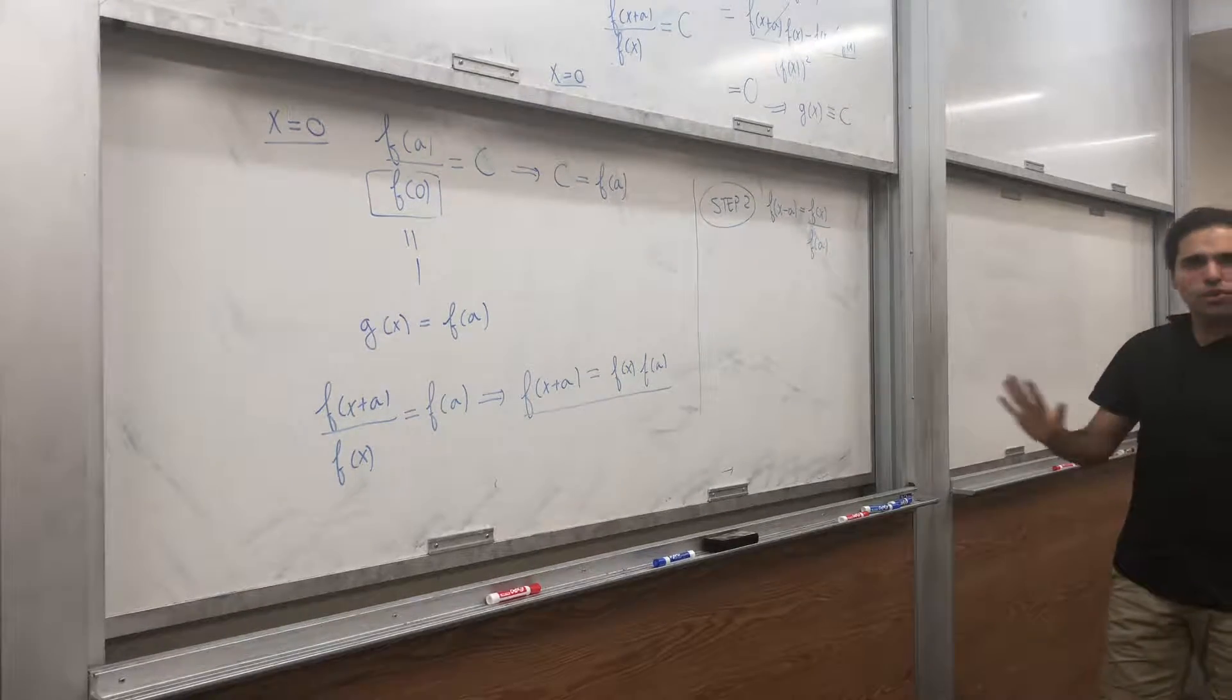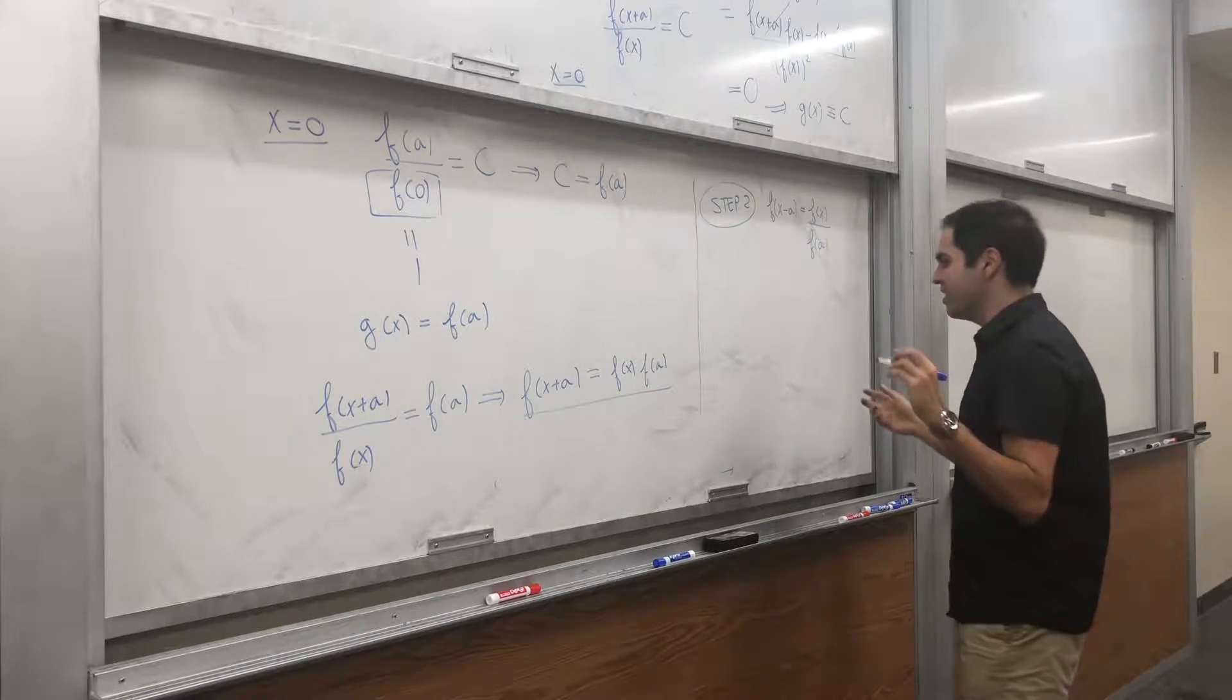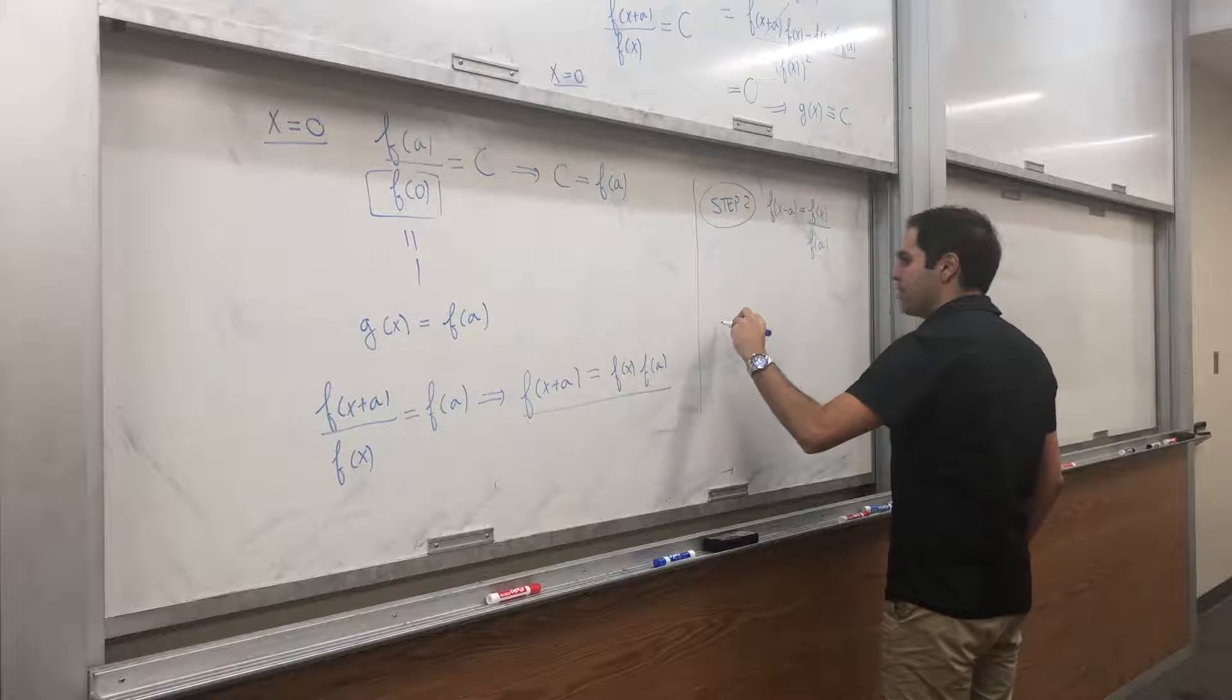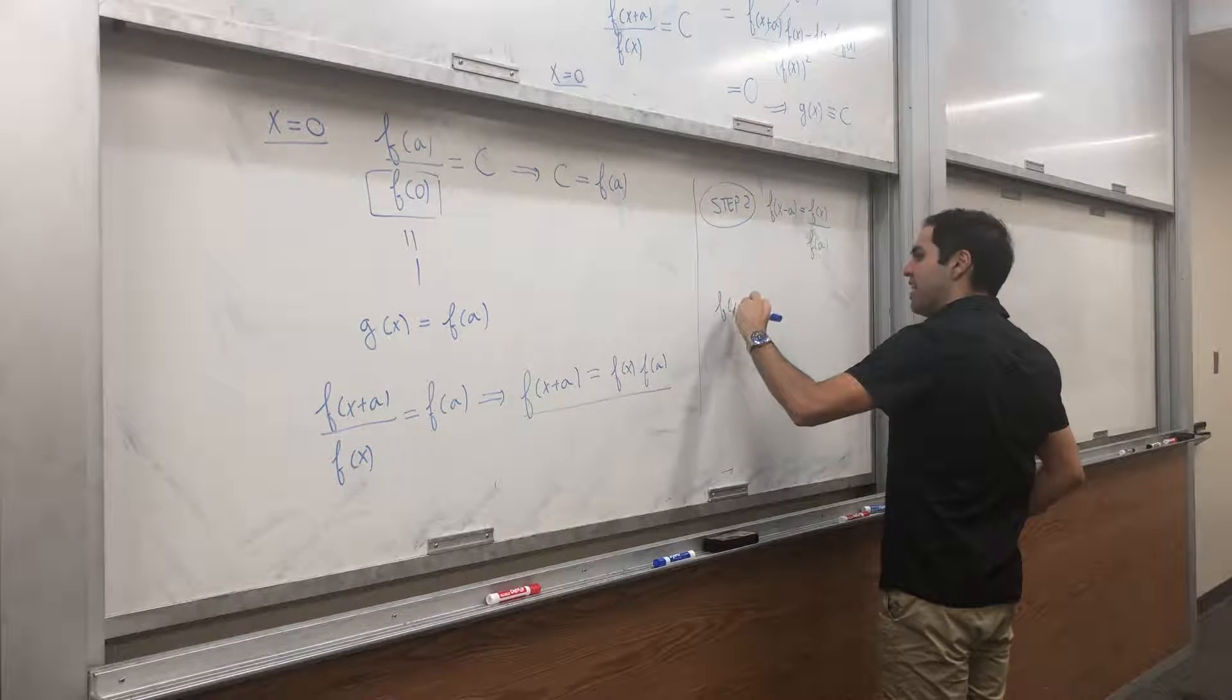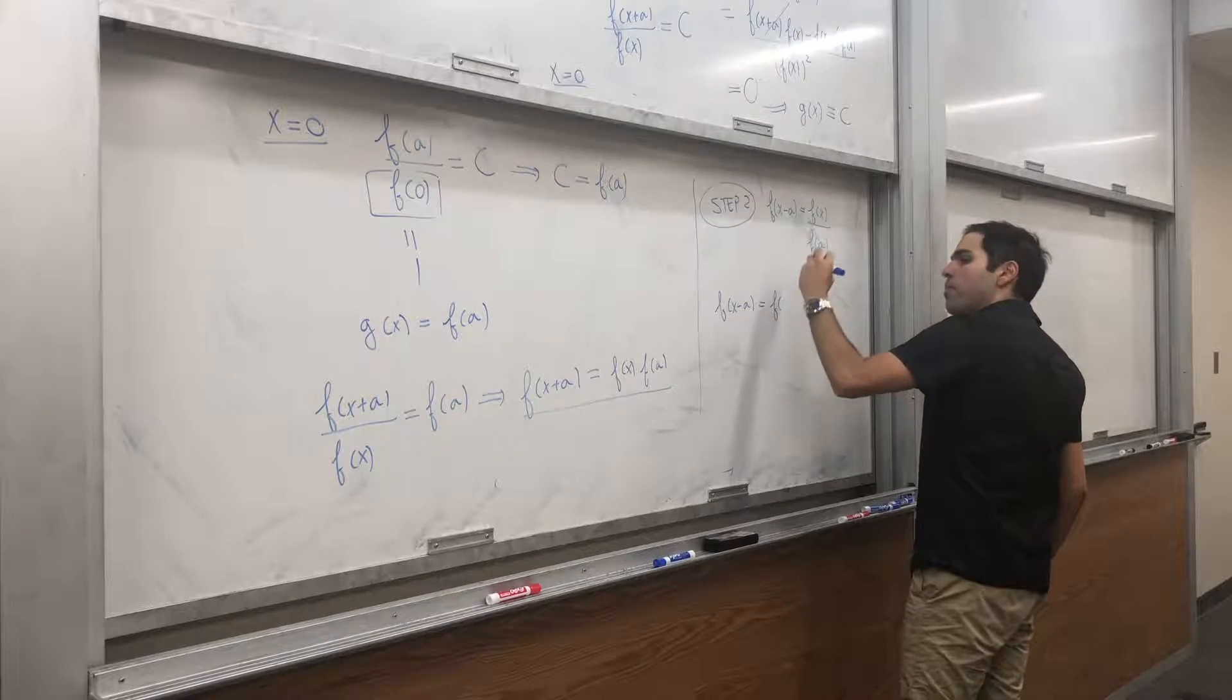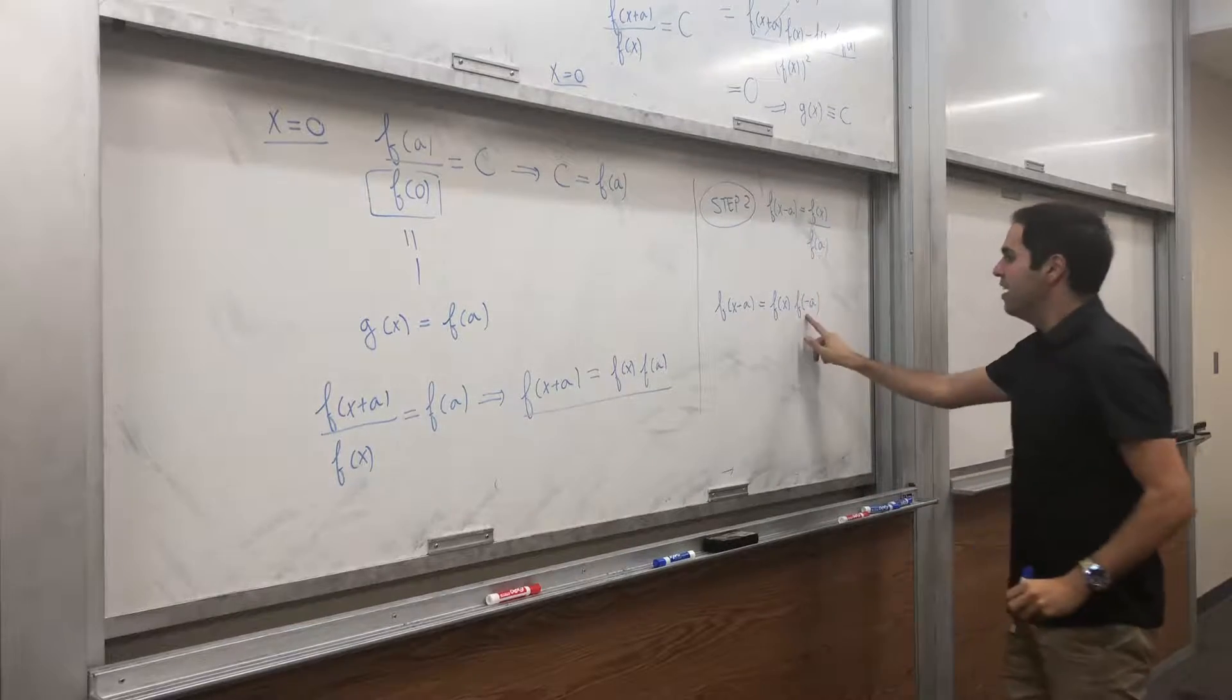Now, you could do it the same way, but turns out there's an easier way of doing this, because notice, f of x minus a, by the property I've just shown, that's f of x times f of minus a.